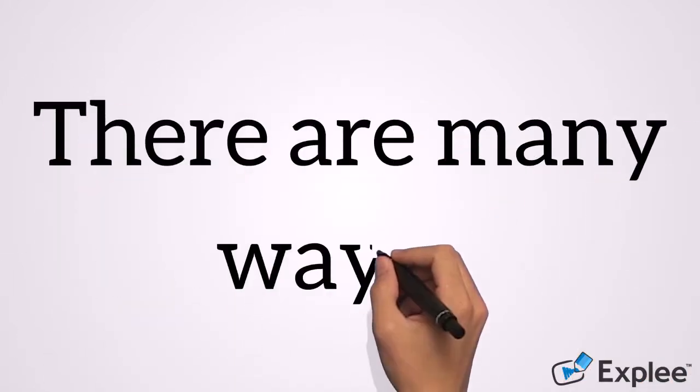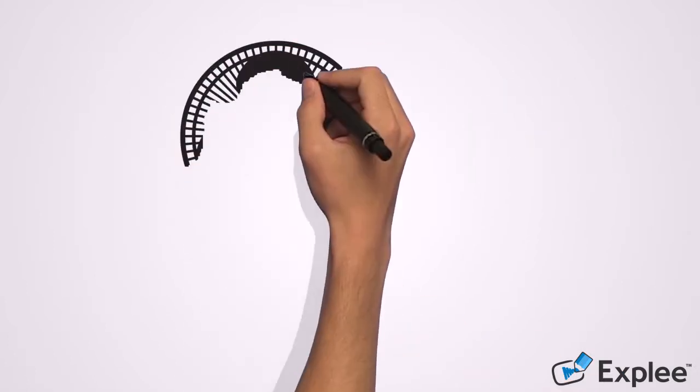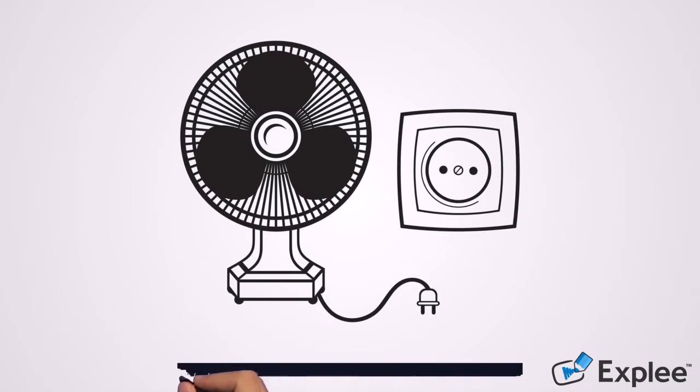Thankfully, there are plenty of ways to do it. Use a fan. If the noise isn't too loud, use a fan to drown it. Depending on the apartment size and the number of people living with you, get a fan that will make enough noise to block most of the noise coming from the neighbors.